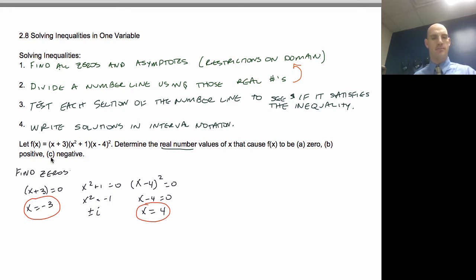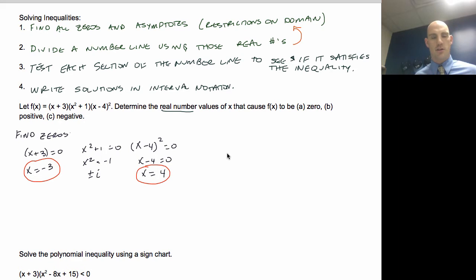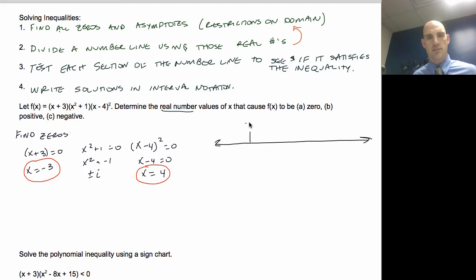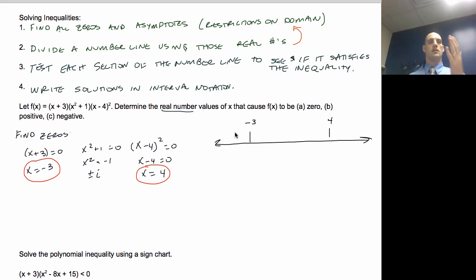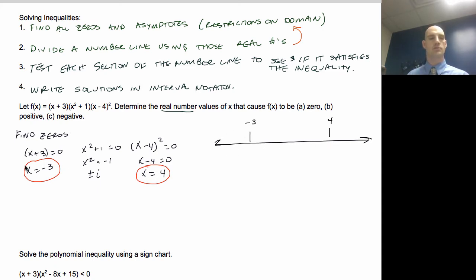I'm going to divide a number line into sections using −3 and 4, which gives me three sections of answers. I'm going to test each section, so I need a number from each section — I'll pick −4, 0, and 5.